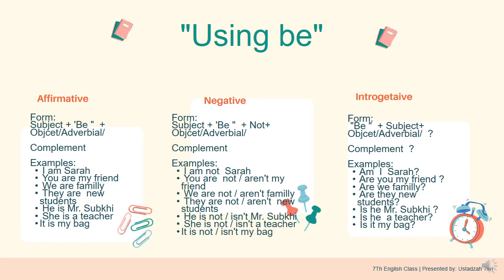For the negative form, simply add 'not' after the 'to be.' The formula is: Subject + Be + Not + Object/Complement. For example: 'They are not new students' — mereka bukan para siswa baru. Another example: 'She is not a teacher' — dia bukan seorang guru, mungkin dia seorang siswa.